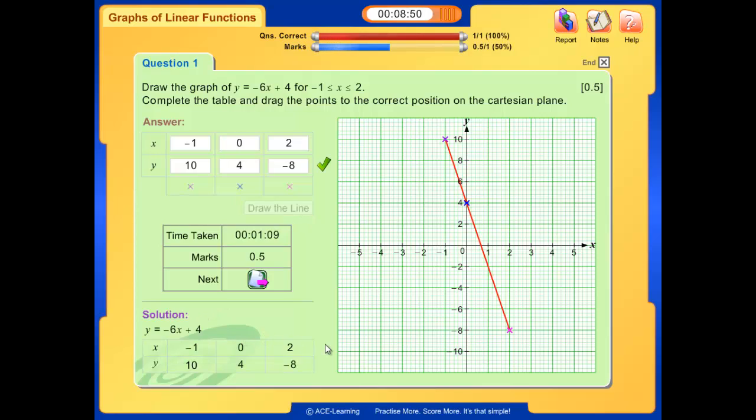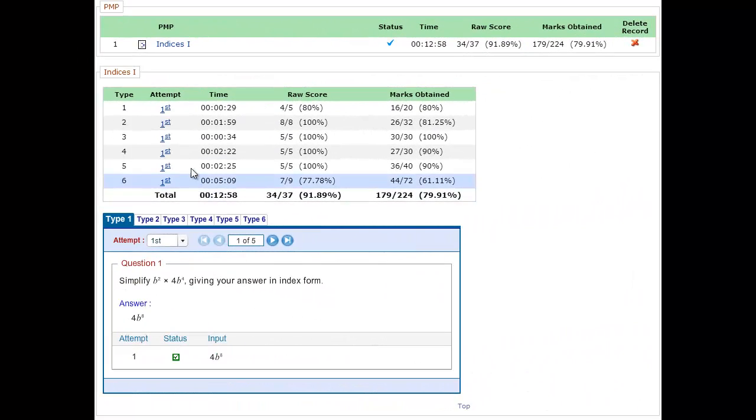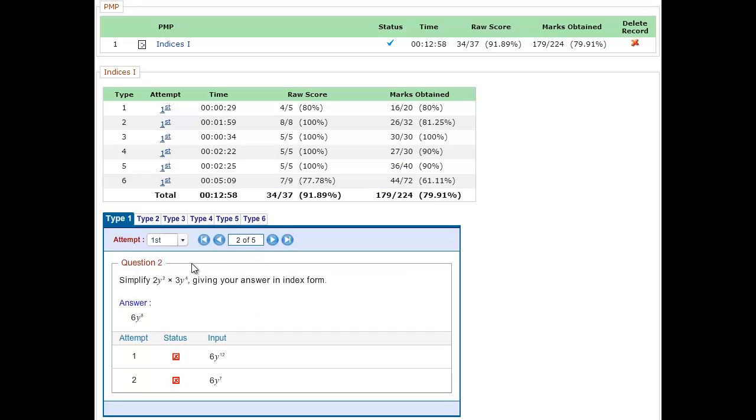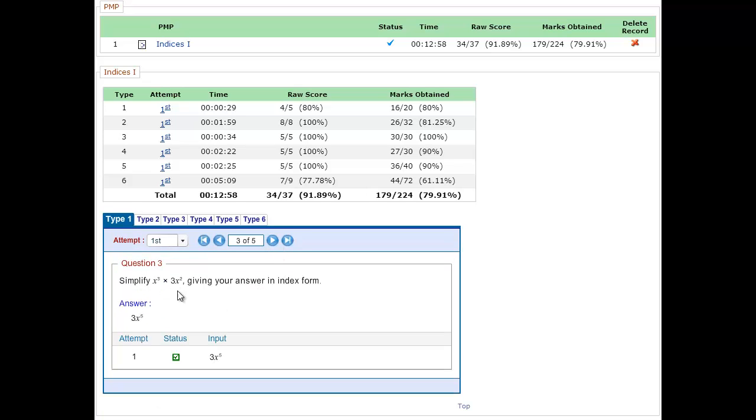Next, we will look at how comprehensive our reports are for the PMP. This is an individual student's report. The results for each level and type of question for the topic is reflected in the report. As mentioned, each student is given a unique set of exercises, so the report should be able to reflect that. This question is unique to this student.